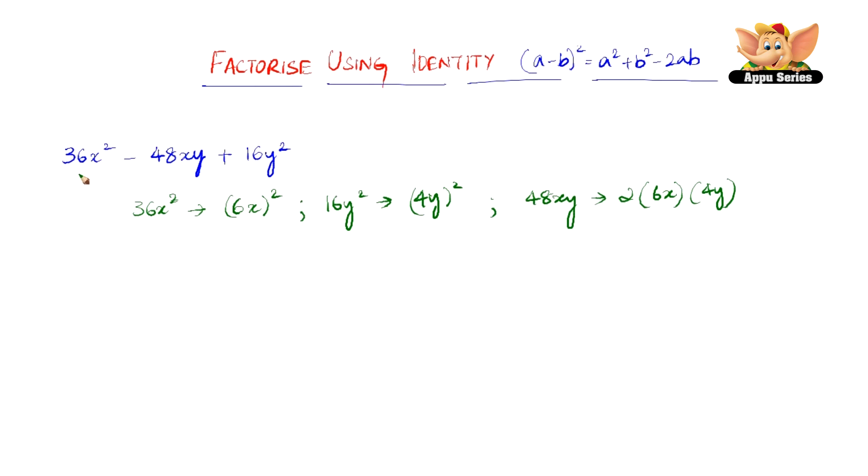So therefore we can factorize 36x square minus 48xy plus 16y square as 6x minus 4y the whole square. Let us quickly do a check of 6x minus 4y the whole square gives us 36x square minus 48xy plus 16y square.